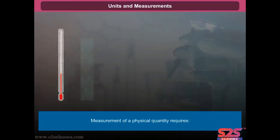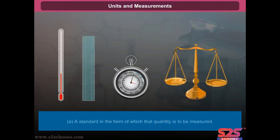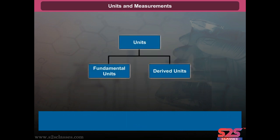Measurement of a physical quantity requires a standard in the form of which that quantity is to be measured. The numerical value represents how many times that standard has come in the physical quantity. Units are classified in two categories: fundamental units and derived units.